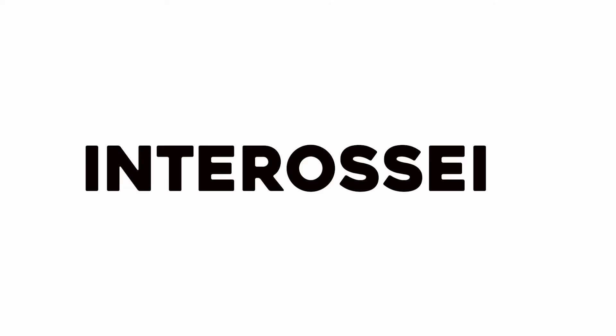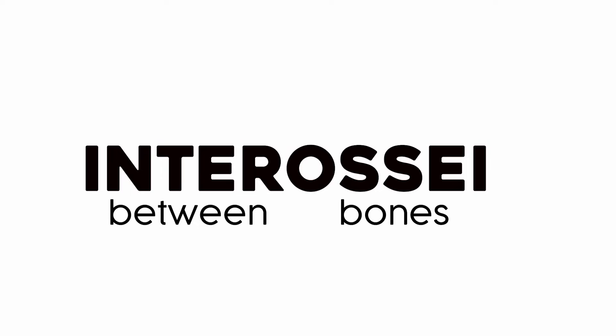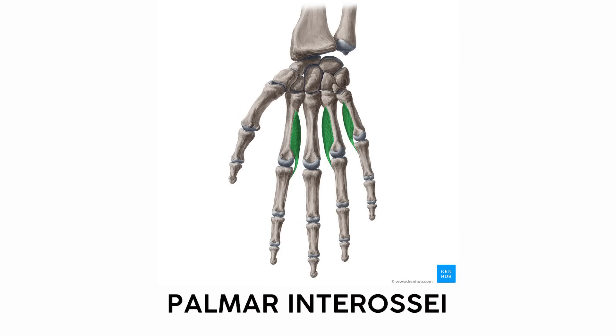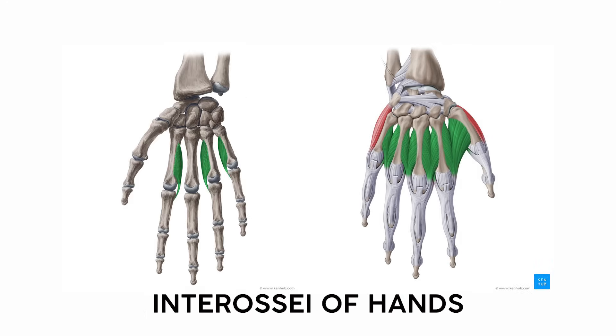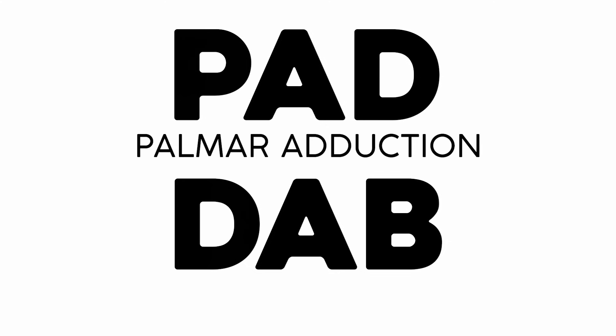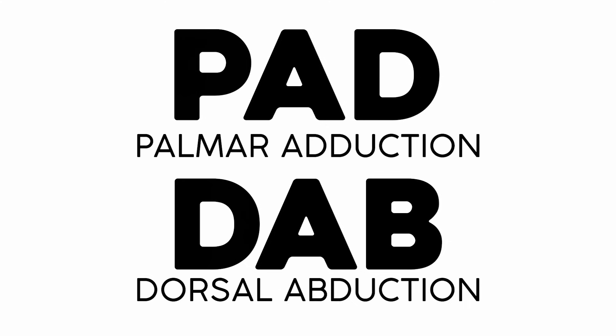The last two are the interossei muscles, literally translating to between bones — in this case, between the metacarpals. The palmar interossei adduct the fingers or bring them together, while the dorsal interossei abduct the fingers or spread them apart. Unfortunately they look super similar, so I use the mnemonic PADDAB to remember them: palmar causes adduction, while dorsal causes abduction. Fun fact: the only reason Spock can do the Vulcan greeting is because of these muscles — it involves both finger adduction and abduction.